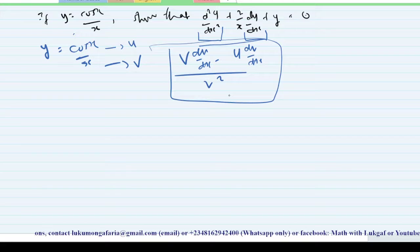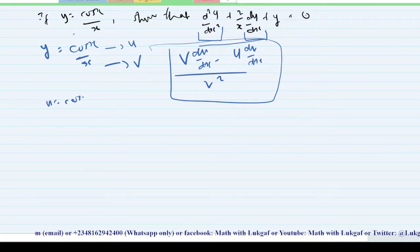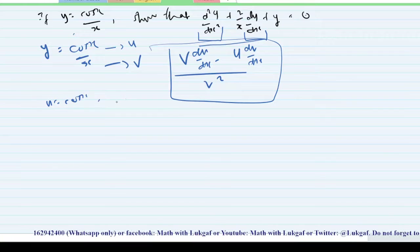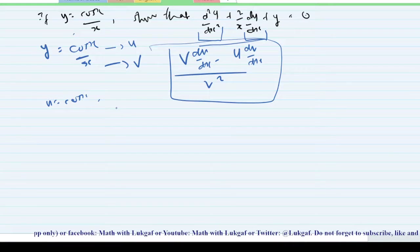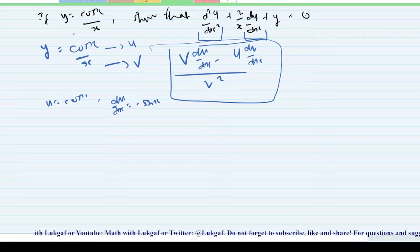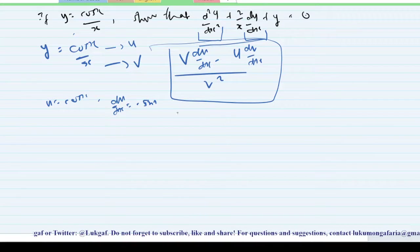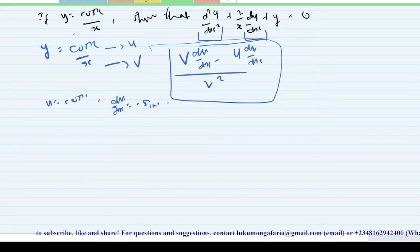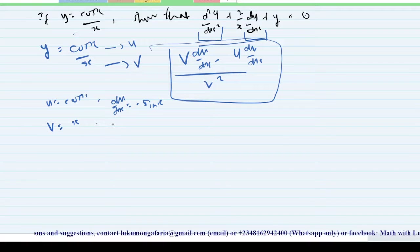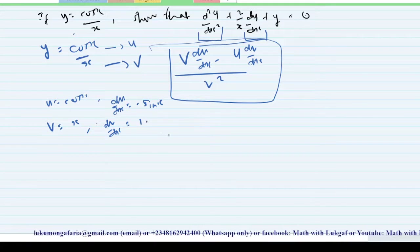Since my u is cos(x), I can find du/dx, which will be minus sine(x). Then my v is x, so automatically your dv/dx will be 1.